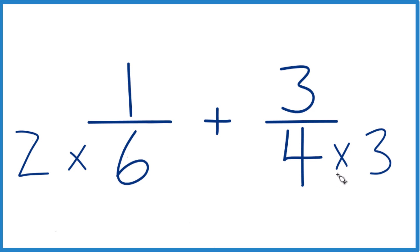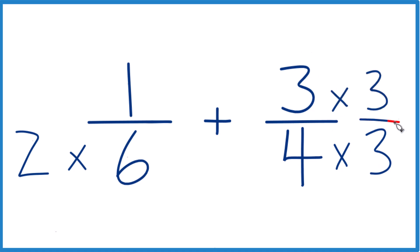We'd be in good shape. But we can't just multiply the denominator by a number — we need to multiply the numerator by the number as well. Because 3 over 3 would just be 1, and when we multiply by 1, we don't change anything, just the way it's represented.